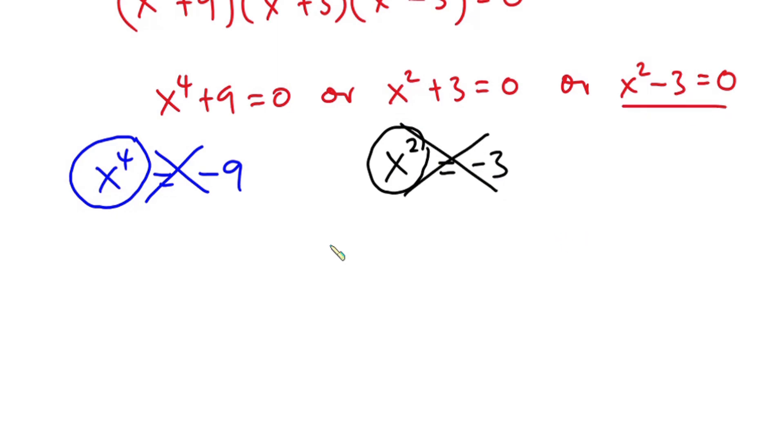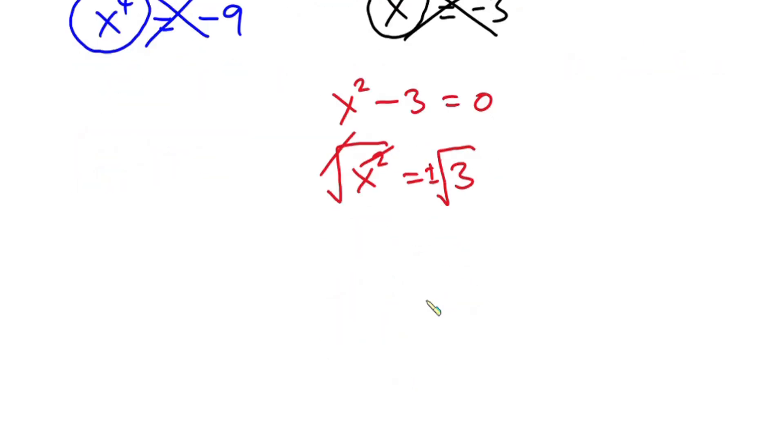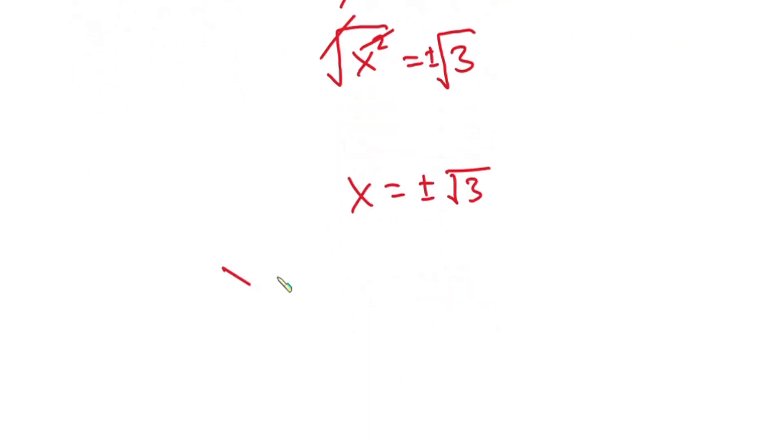Now considering this equation, we have x to the 2nd power minus 3 is equal to 0. So this means that x to the 2nd power is equal to 3. Since we are looking for x, let's go ahead and take square root on both sides of the equation. And don't forget we have plus or minus here. So this square will cancel the square root. Now we have x is equal to plus or minus square root of 3. And this implies that it is either x is equal to square root of 3 or x is equal to negative square root of 3.